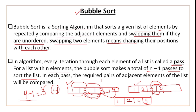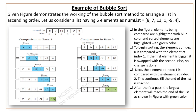In each pass, the required pairs of adjacent elements are compared. Now let's understand with a full example. We will demonstrate the working of bubble sort to arrange a list in ascending order.